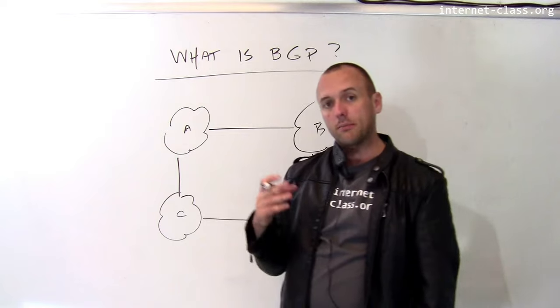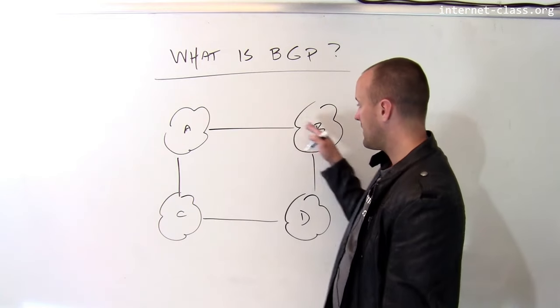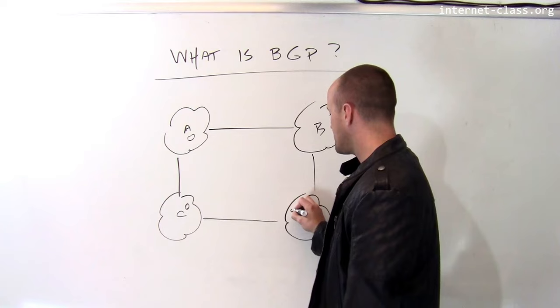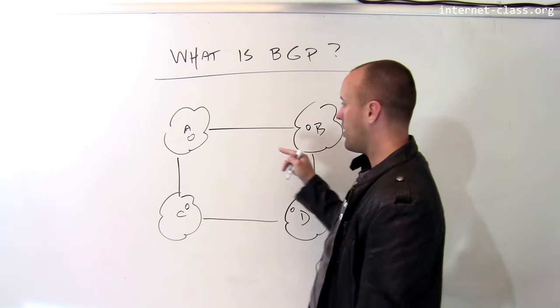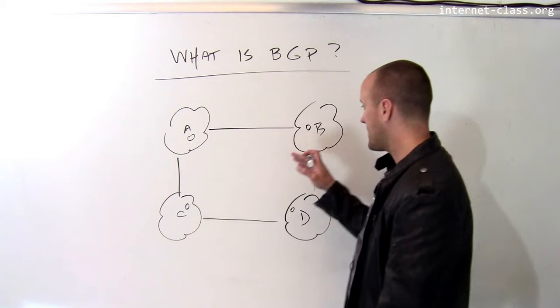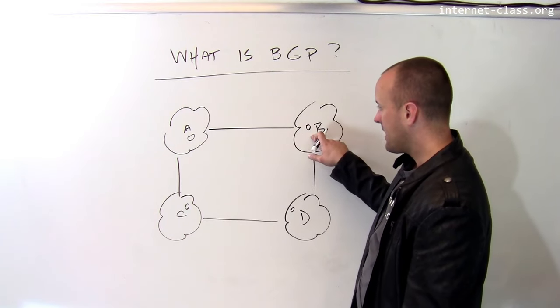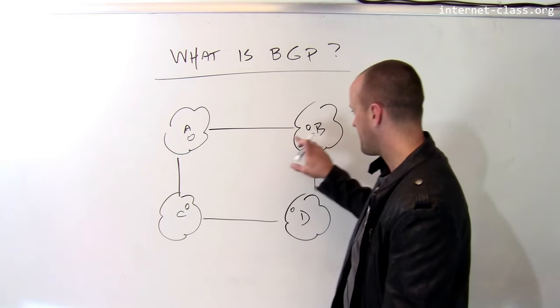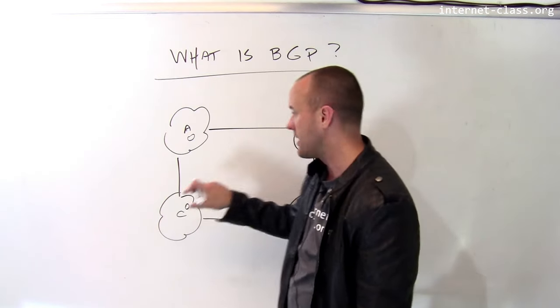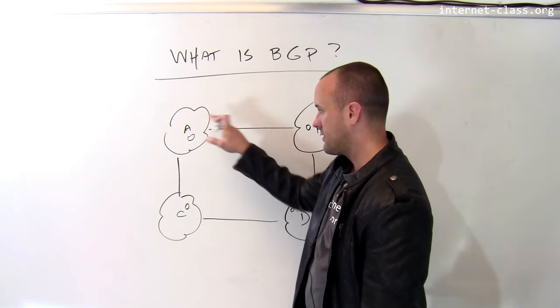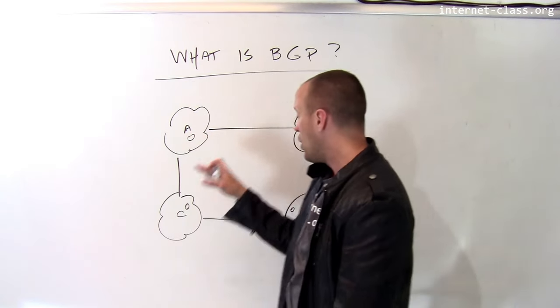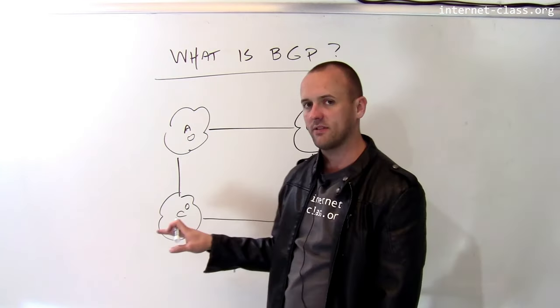So the Border Gateway Protocol or BGP is what the routers in these networks, it's how they exchange information about what they should do with the packet that arrives at their network. Because for example, B, in order to reach C, if someone inside B's network wants to transmit a packet to someone inside C's network, B has to either send the packet to autonomous system A first, or it has to transmit the packet to autonomous system D.